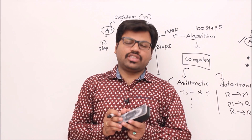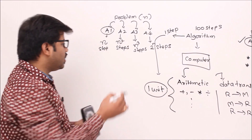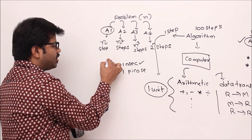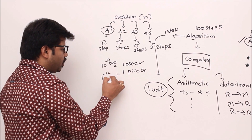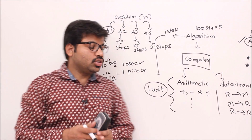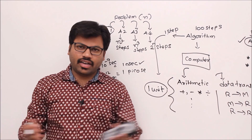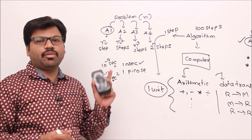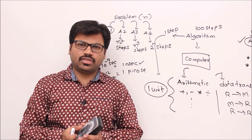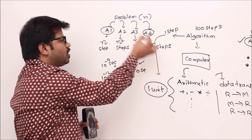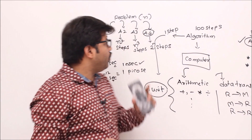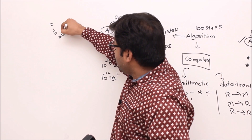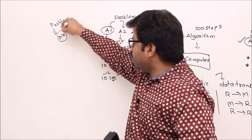Some students have this doubt: since modern computers execute instructions in 1 nanosecond (10^-9 seconds) or even 1 picosecond (10^-12 seconds), should I really worry about whether my algorithm's time complexity is n, n², n³, or 2^n? The answer is: yes, definitely you should worry about time complexities. Let me show you why by picking algorithm a4 with time complexity 2^n steps.